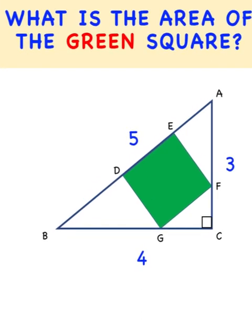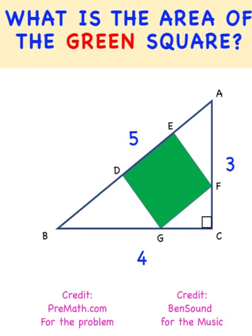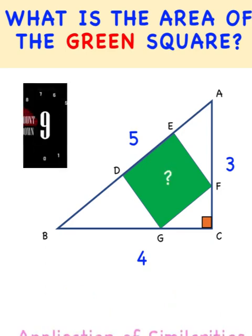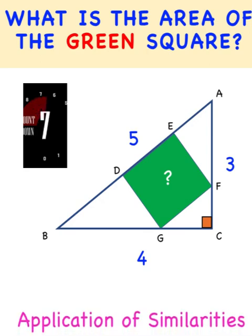Hi everyone, here is our math problem for today. We are given this 3×4×5 right triangle and this green square that is inscribed in our triangle. We would like to find what is the area of the green square. You can pause the video and see if you can solve this problem involving similarities. And if you already know the answer to our problem, please write it in our comment section.